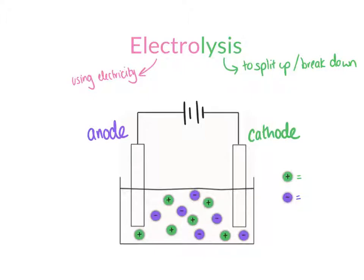That's not the official definition you need to learn. The official definition is: the decomposition of a liquid electrolyte using a direct current of electricity. This process involves electricity and essentially what we're doing is splitting up compounds into their original elements. Let's have a quick recap of what actually happens during Electrolysis.